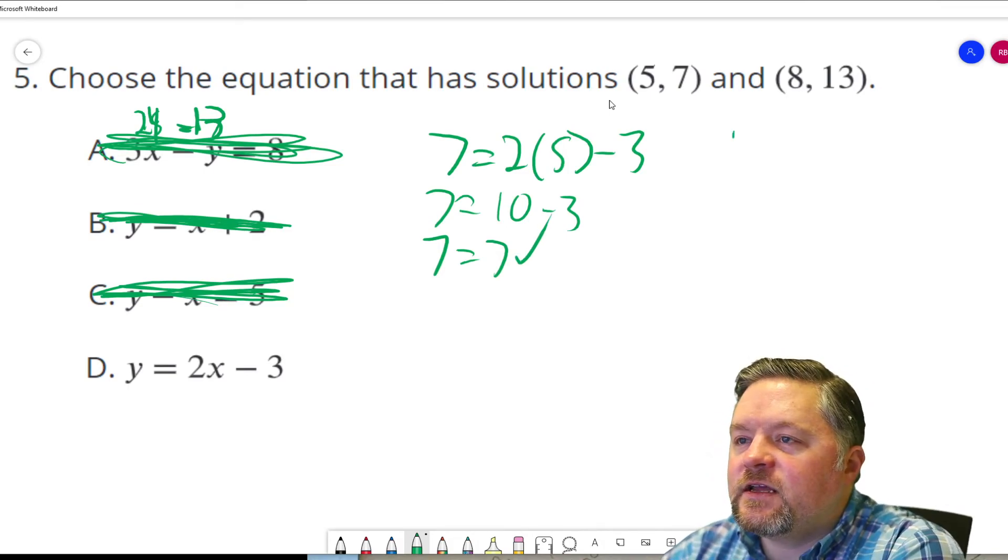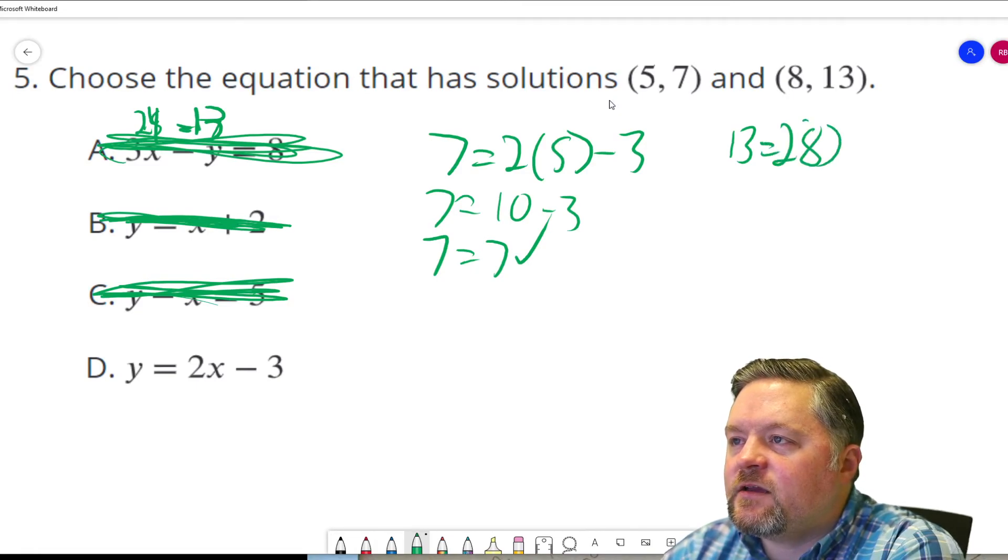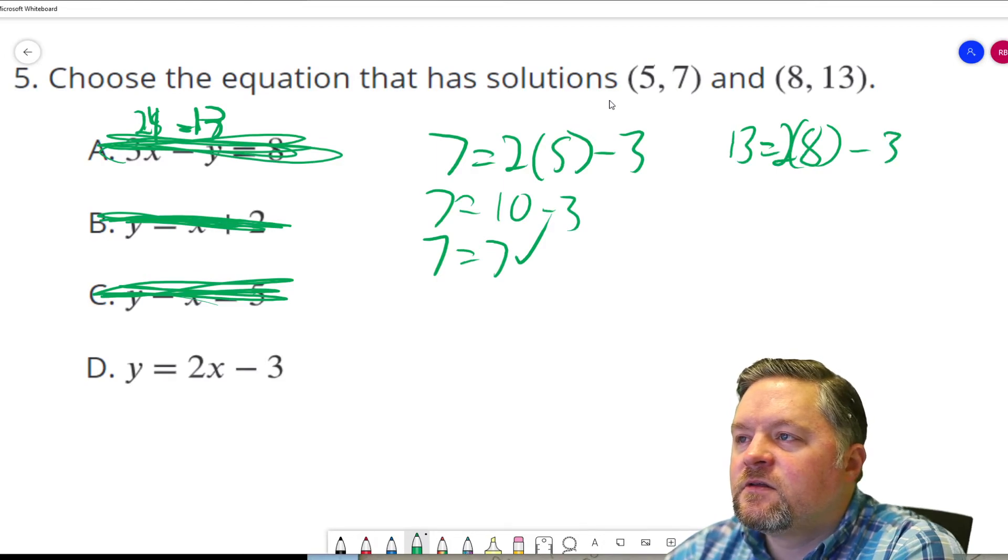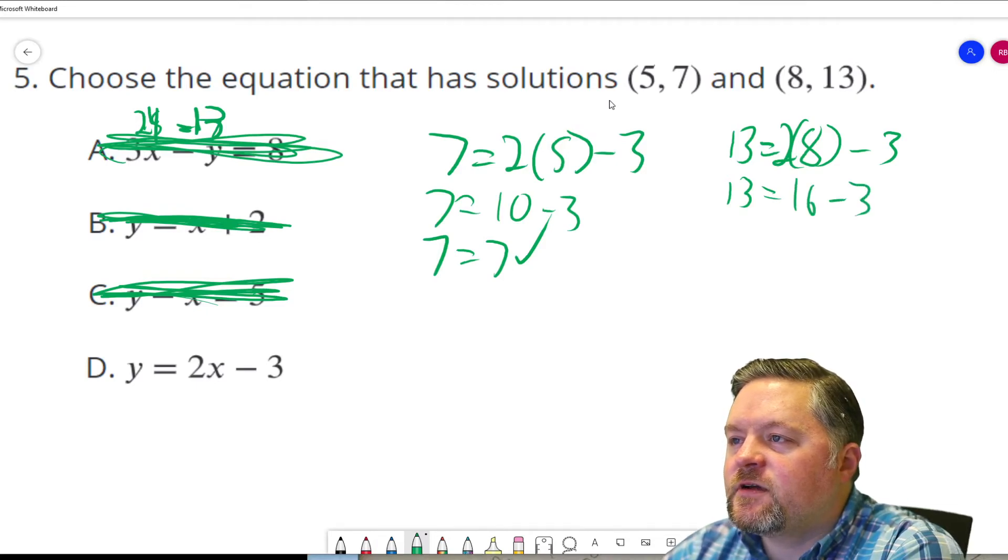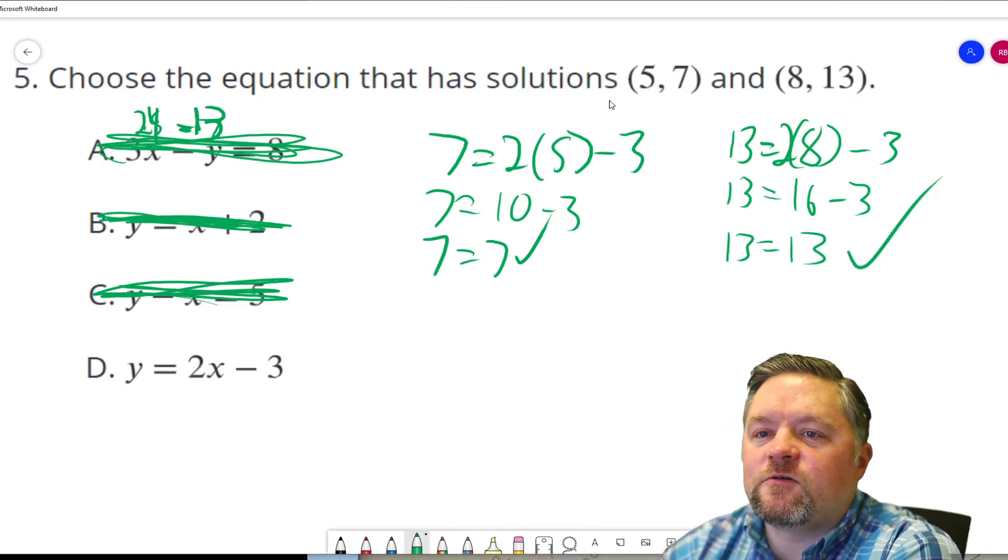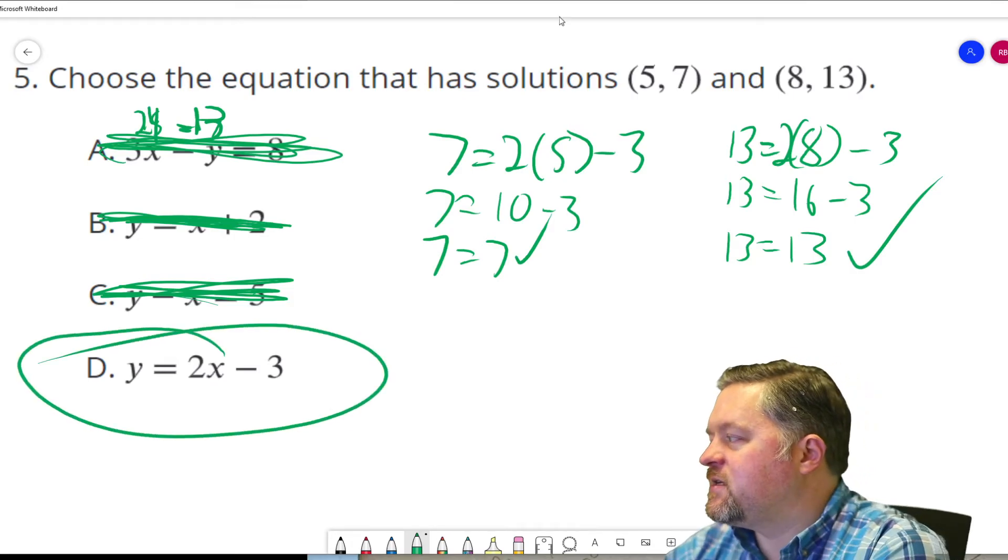Plug in 8, 13. 13 equals 2 times 8. Minus 3. 13 equals 2 times 8 is 16. Minus 3. 13 equals 16 minus 3 is 13. Both of those work. The correct answer is D.